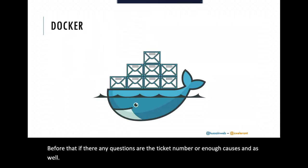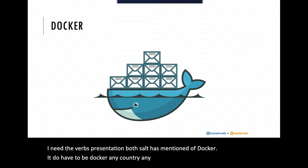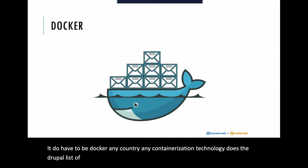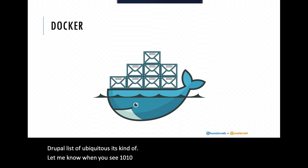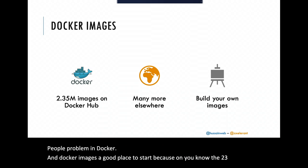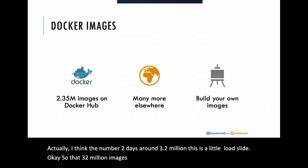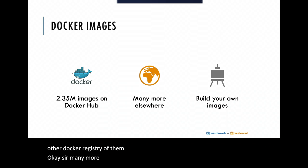Any DevOps presentation worth its salt has to mention Docker — it doesn't have to be Docker specifically, any containerization technology works, but Docker has become synonymous with containers. Docker images are a great place to start — there are around 3.2 million images on Docker Hub alone, and that's just Docker Hub; there are many other registries out there, and of course you can create your own images.